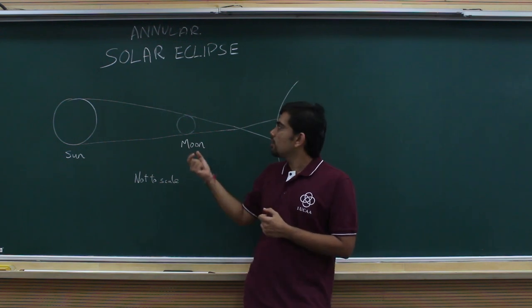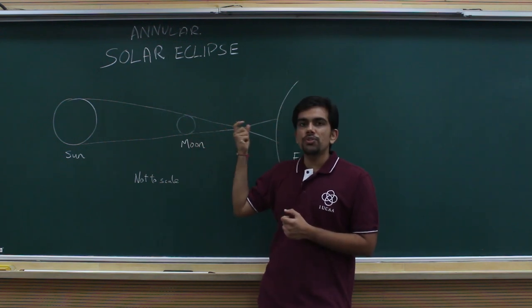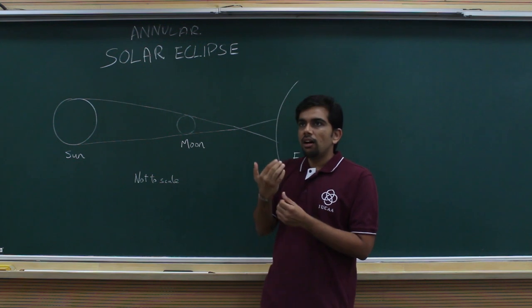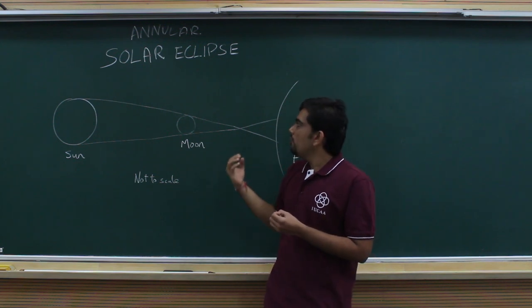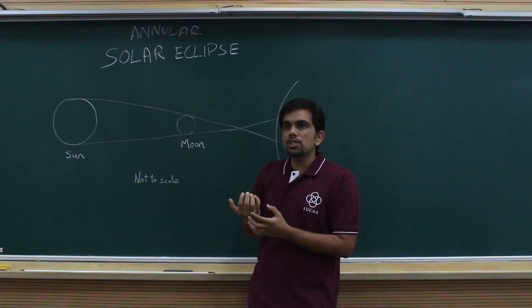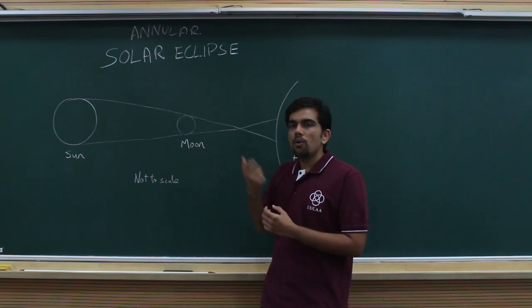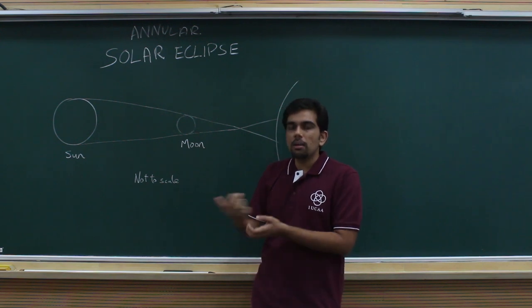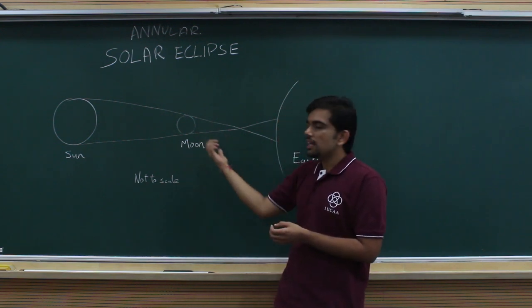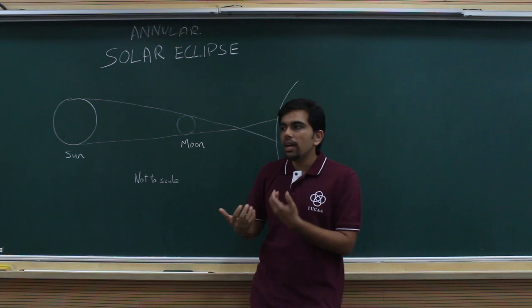Another question was: if the moon moves further away from the Earth as it is slowly doing, will we see more annular eclipses only? That is true, but since the rate of motion of the moon is much smaller than what we experience in our typical lifetimes, this effect won't happen during our lifetimes.